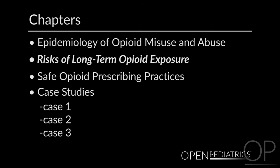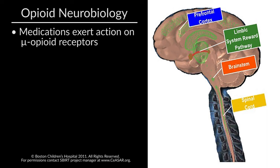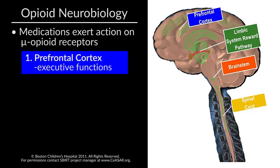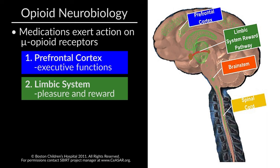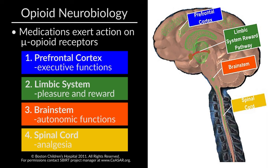Risks of Long-Term Opioid Exposure. Opioid medications exert their action on the mu opioid receptor. This graphic demonstrates areas of high mu opioid receptor density in the central nervous system. The first area is the prefrontal cortex, responsible for executive functions such as controlling impulsivity. In green, we see the limbic system, which includes the nucleus accumbens and ventral tegmental area — important for pleasure, reward, and the development of addictions. The area in orange is the brain stem, responsible for autonomic functions such as respiration. The area in yellow is the spinal cord, responsible for analgesia.